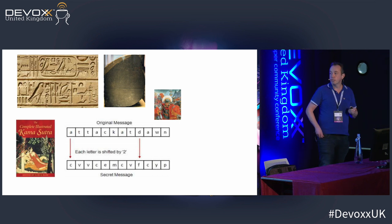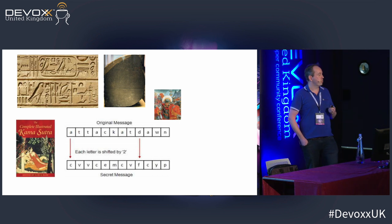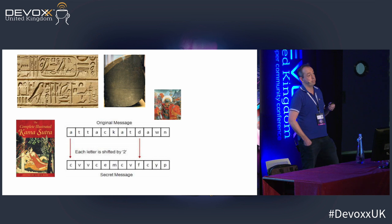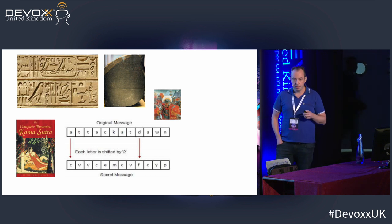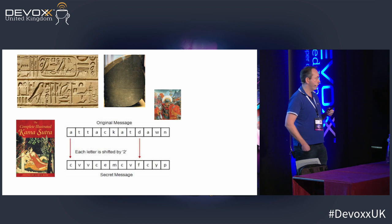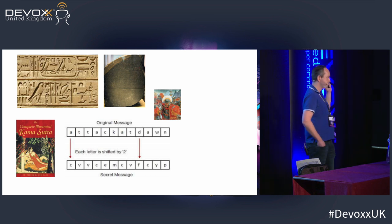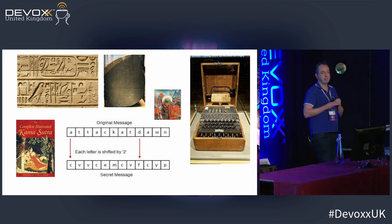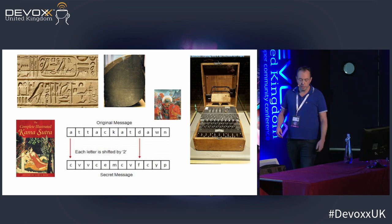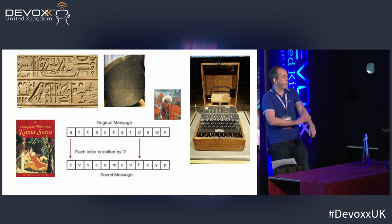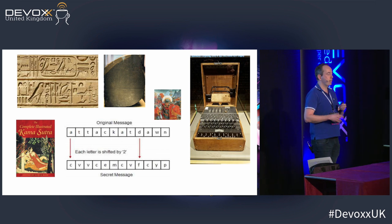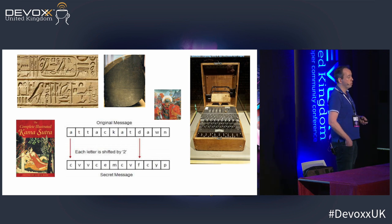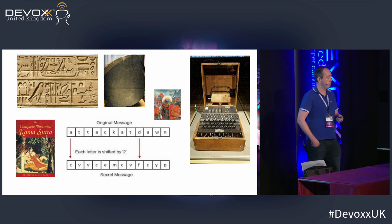Cryptography is also in the Kama Sutra. There's a section on cryptographic functions as a means of communication between lovers. So if you were questioning whether cryptography is sexy or unsexy, I proved you wrong. Does anyone know what this is? The Enigma machine. It was used extensively by the Germans in the Second World War to encrypt and decrypt messages. It was cracked by Alan Turing and his team, and it has been said to have shortened the war by two or three years — a very important achievement.